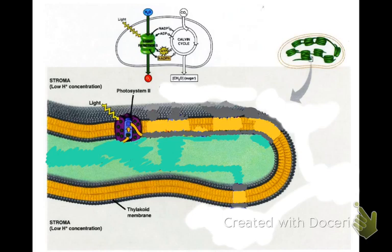When light strikes Photosystem II, it excites an electron and passes it to plastoquinone, or PQ. That leaves an electron hole in Photosystem II. It needs to recover those electrons, and so it does that by splitting water, producing half an O2 molecule. That lone oxygen will join with another oxygen to become O2 — the oxygen gas we breathe. It also creates some free electrons and two hydrogen ions, which are in the inside of the thylakoid membrane.